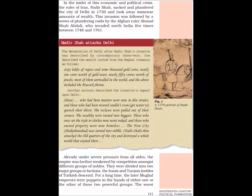Nadir Shah attacks Delhi. The devastation of Delhi after Nadir Shah's invasion was described by contemporary observers. One described the wealth looted from the Mughal treasury as follows: 60 lakhs of rupees and some thousand gold coins, nearly 1 crore worth of gold ware, nearly 50 crores worth of jewels, most of them unrivalled in the world, and the above included the peacock throne.